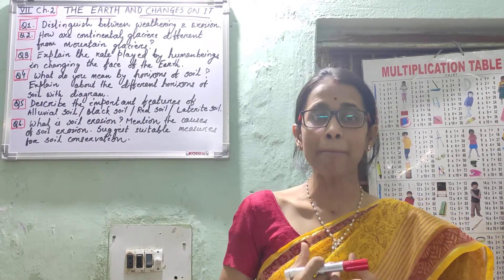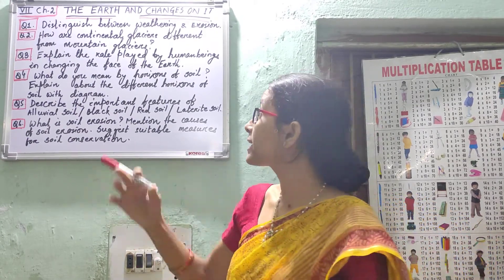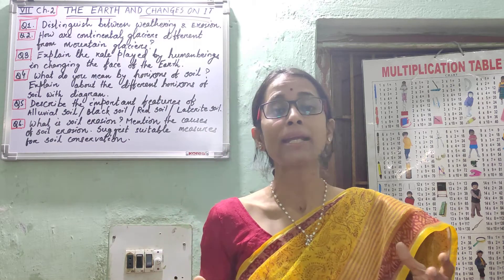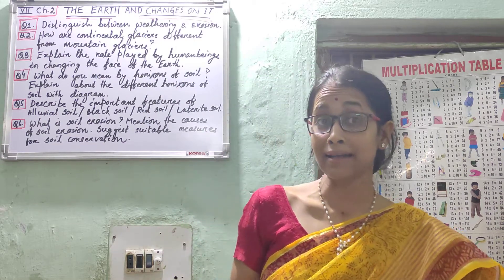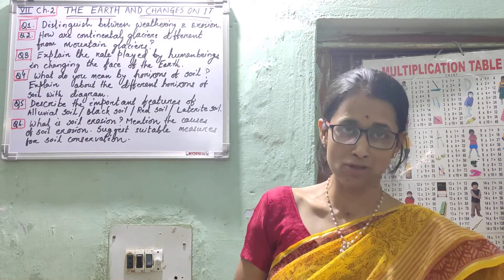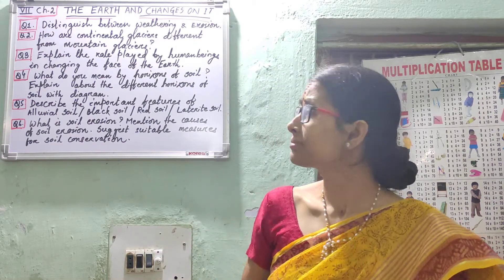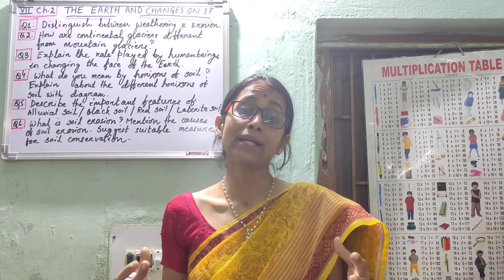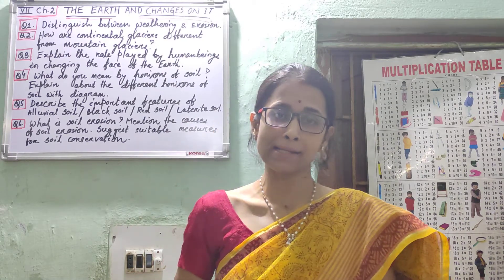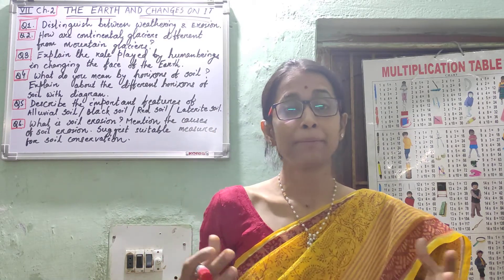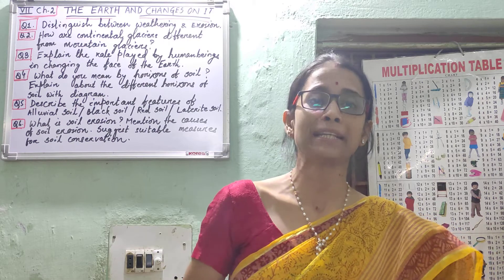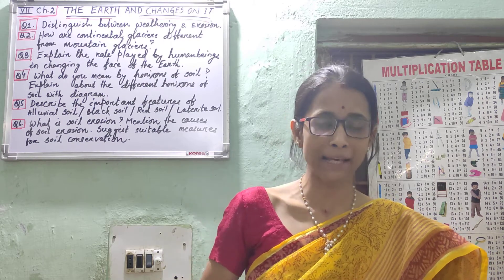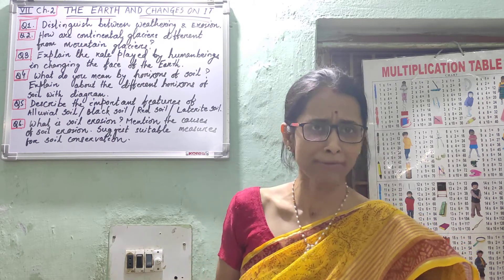Then write examples. For continental glaciers, you can write Greenland, Antarctica, etc. For mountain glaciers, you can write Gangotri, Pindari, Siachen, and Yamunotri glaciers.